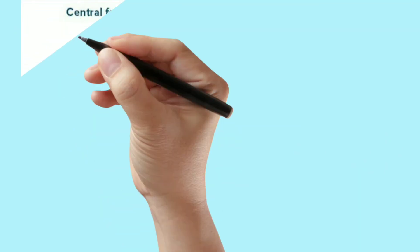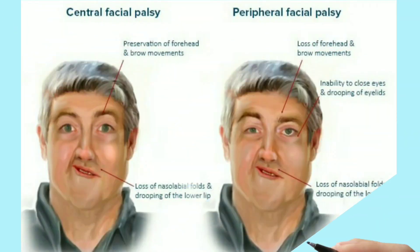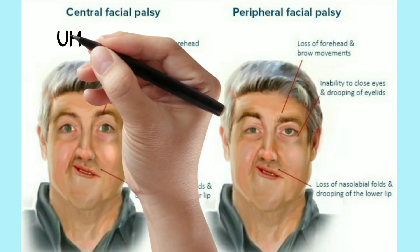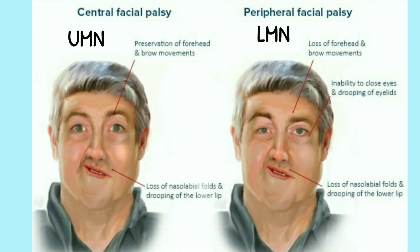Clinical features of central and peripheral palsy: In central palsy, there is preservation of forehead and eyebrow movements, and there is loss of the nasolabial fold and drooping of the lower lip. In peripheral palsy, there is loss of forehead and brow movements, inability to close eyes and drooping eyelids, as well as loss of nasolabial fold and drooping of the lower lip.